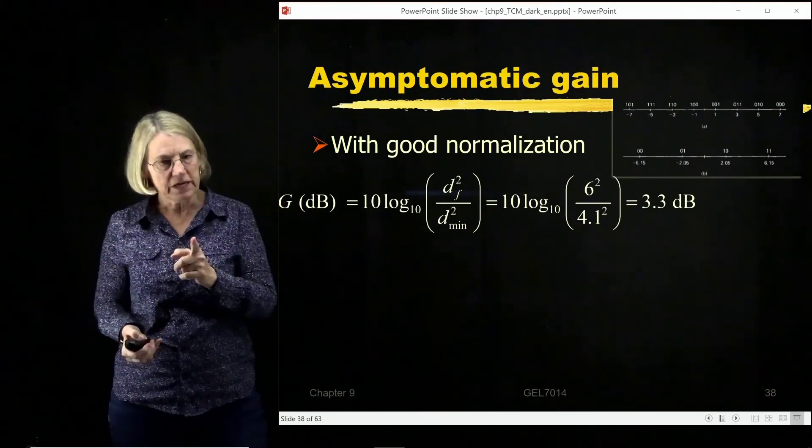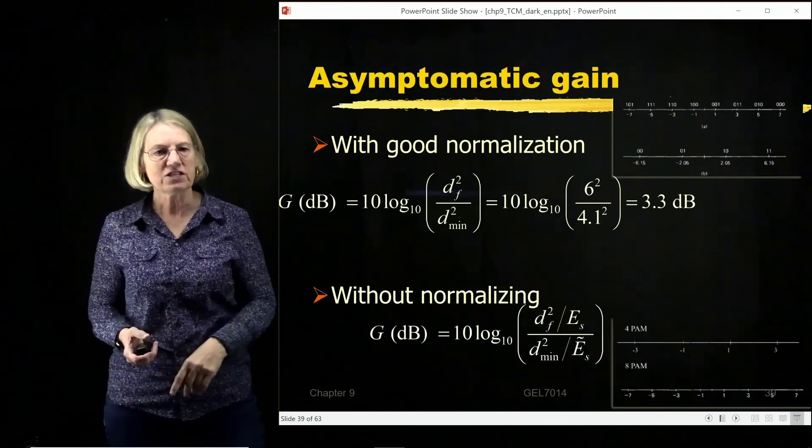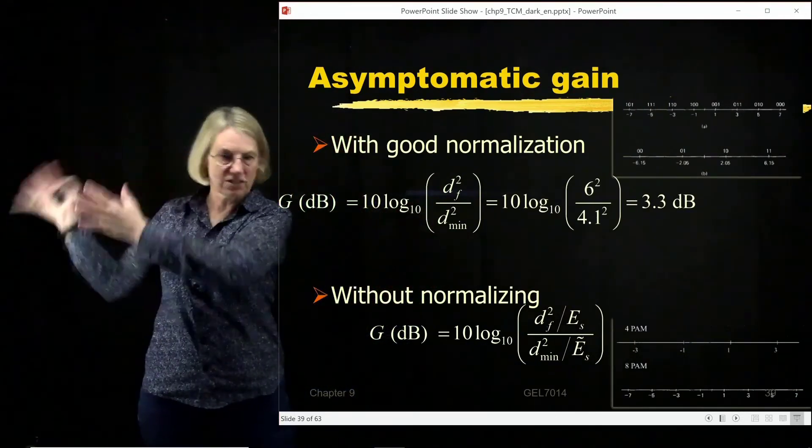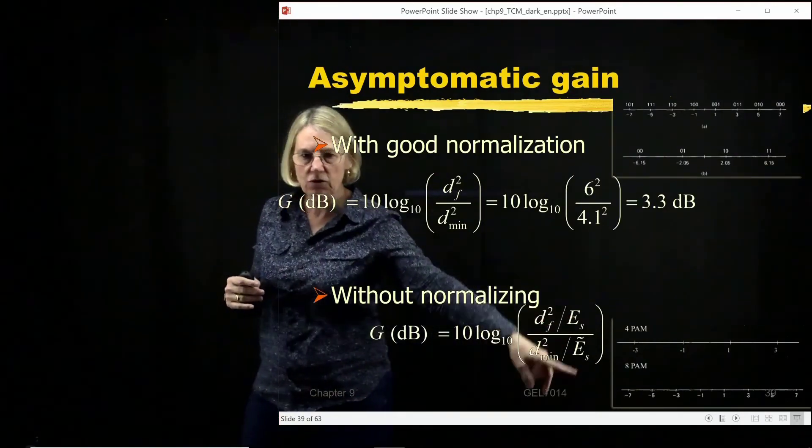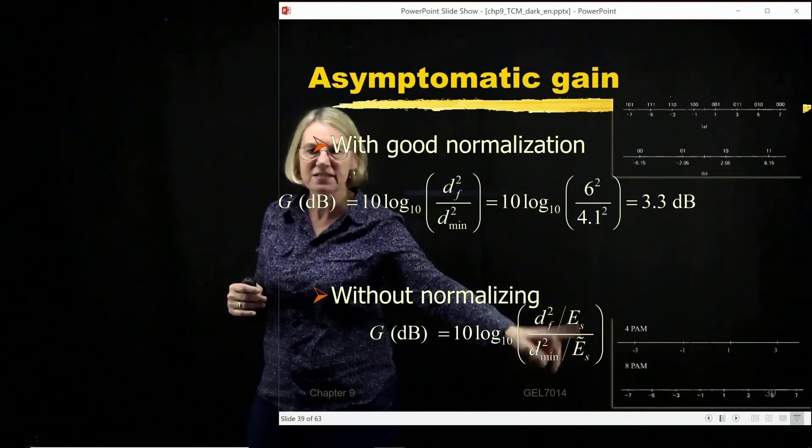Now, just be careful because if you had not done the renormalization, if you had just gone and not gone back to signal space, which is always the safest bet, but if you had just used IQ coordinates, then the average energy symbol would not have been the same in the two, and you would have been comparing apples and oranges.